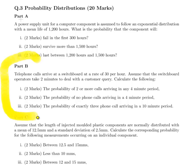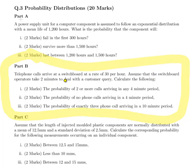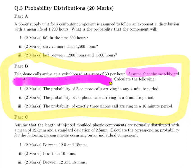In this presentation I'm going to look at this question. Telephone calls arrive at a switchboard at a rate of 30 per hour. The part about the switchboard taking two minutes to deal with calls is actually not relevant to this question — it's a bit of a red herring. We need to calculate: the probability of two or more calls arriving in any four-minute period, the probability of no calls arriving in a four-minute period, and exactly three calls arriving in a ten-minute period.